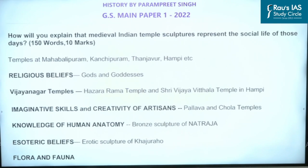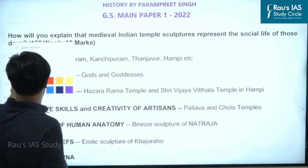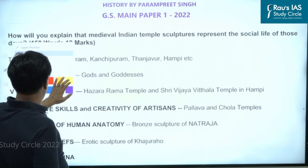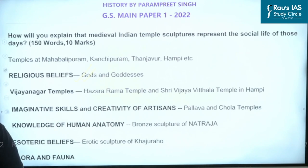Important towns of the medieval ages where temples were built include Mahabalipuram, Kanchipuram, and Hampi. Inside these temples we find various kinds of statues made of metal, clay, wood, and stone. These sculptures first and foremost tell us about the religious beliefs of that time — the gods and goddesses worshipped by people in that period. When writing this, it is good to give examples.